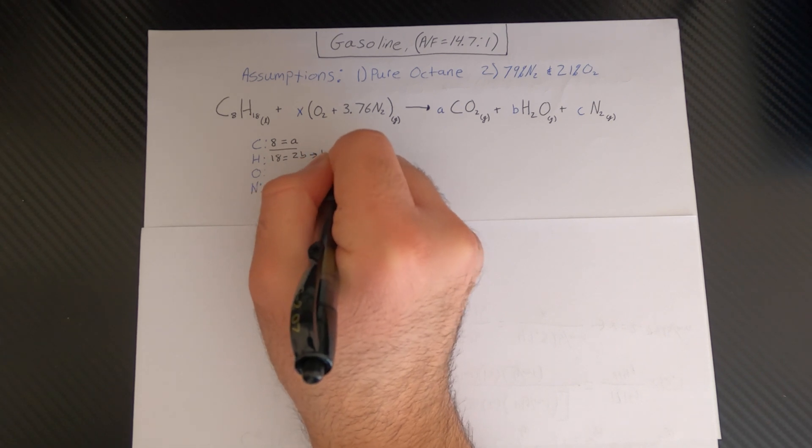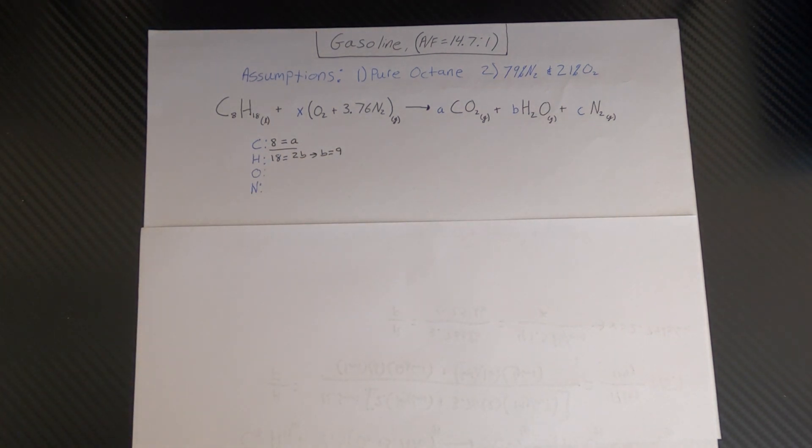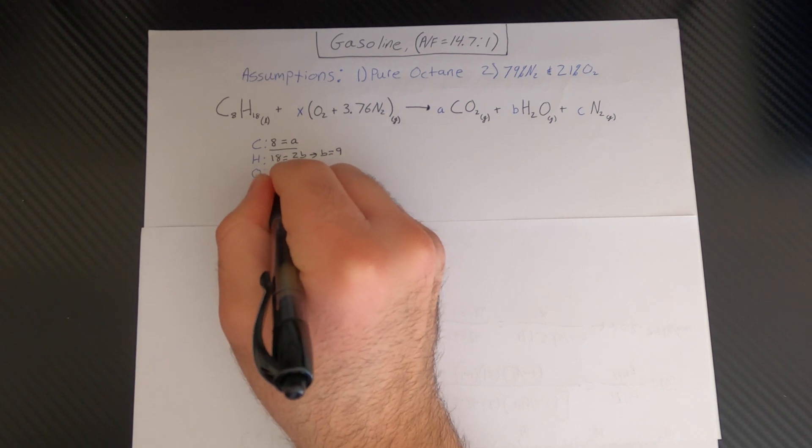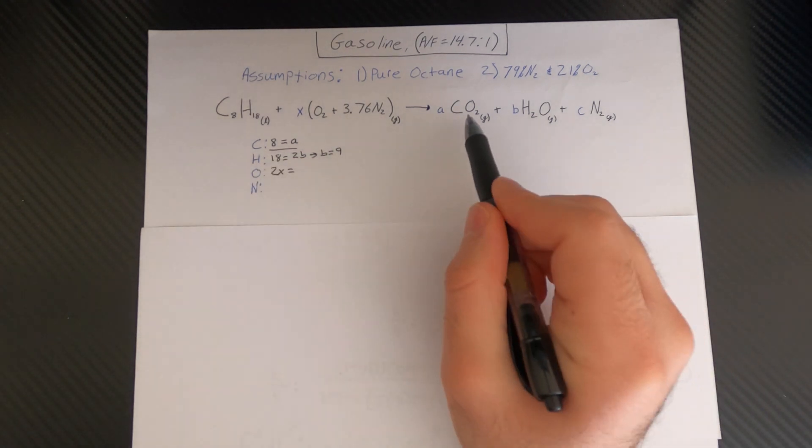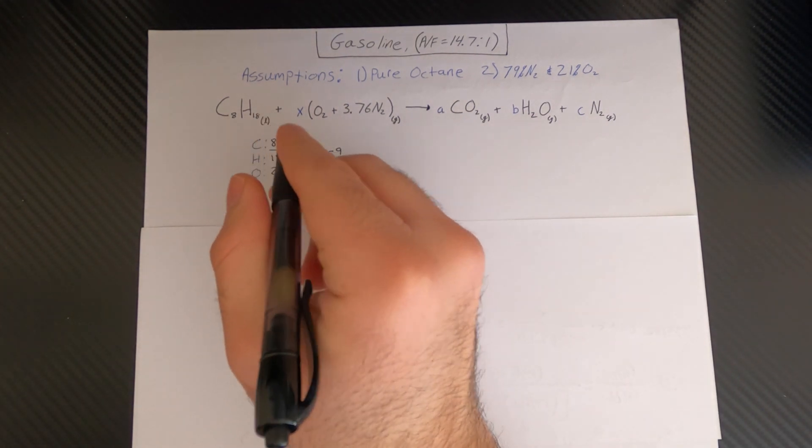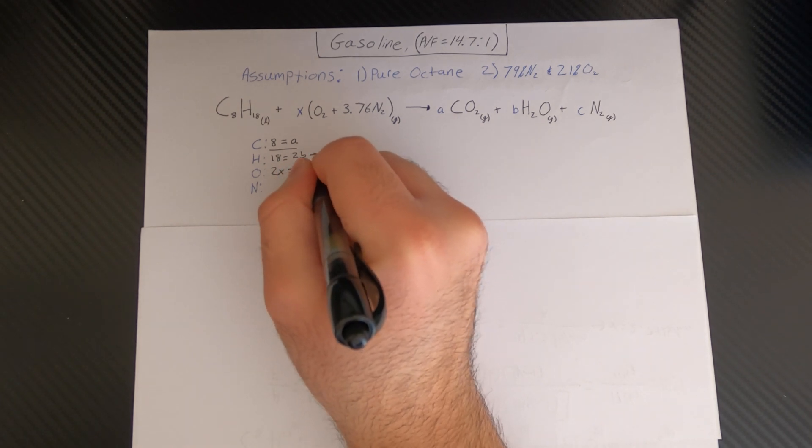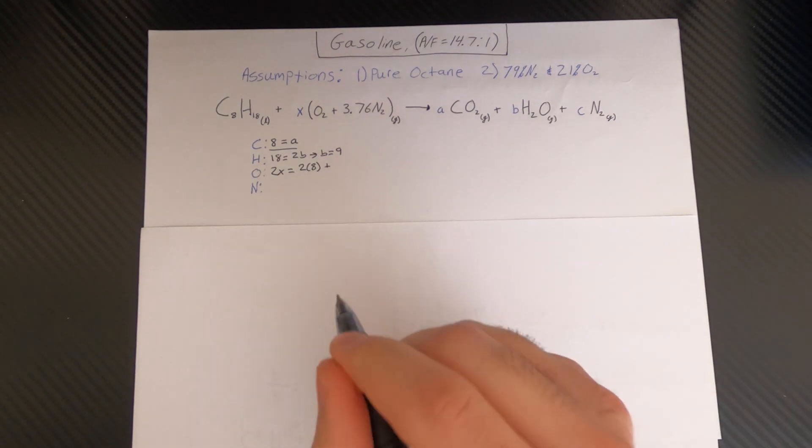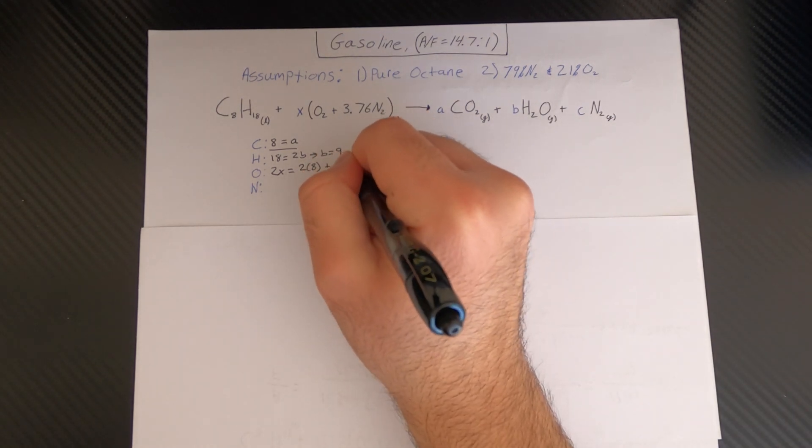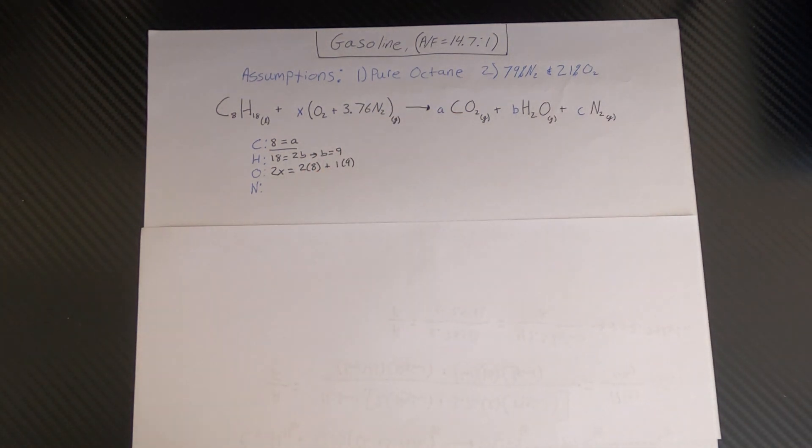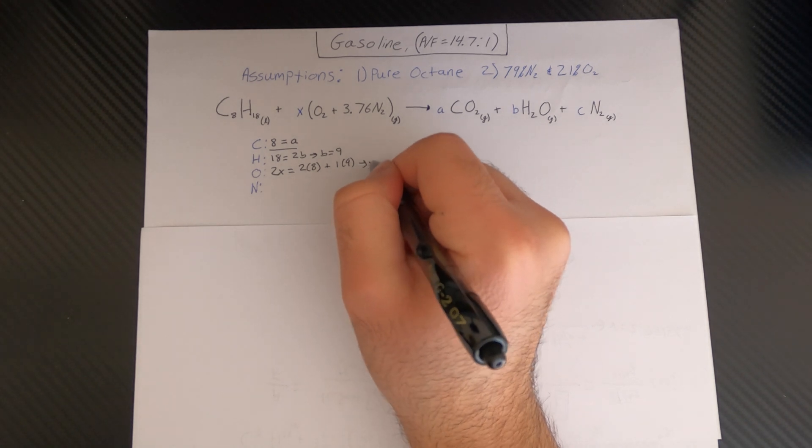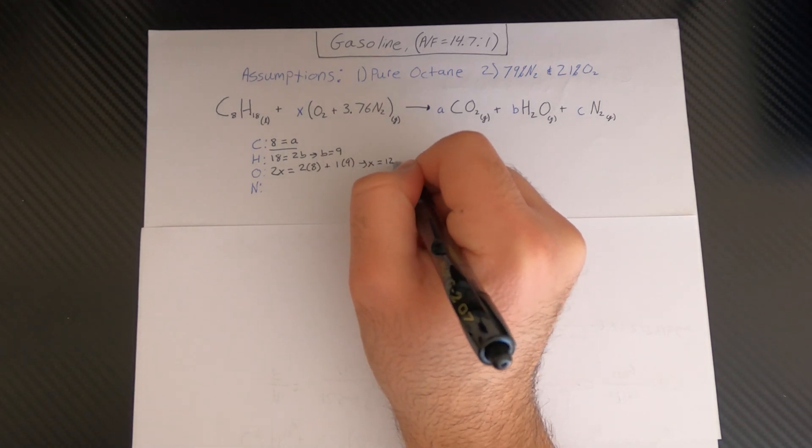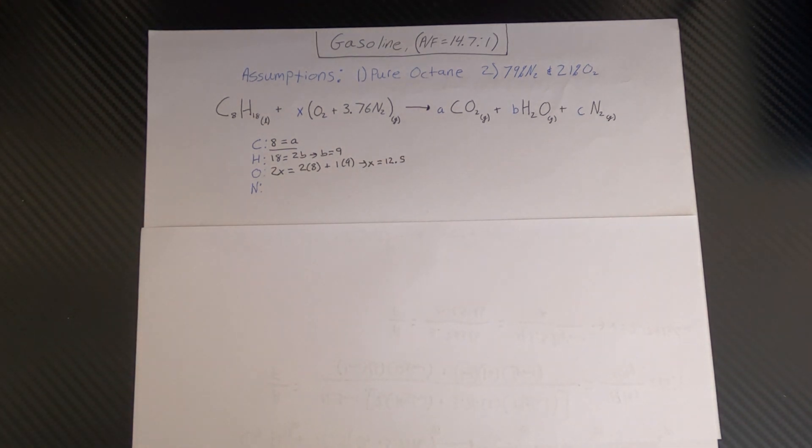And we can continue that with oxygen where we have two times X is equal to two times A, which is 8, plus we have one times B, which B is 9. And then here we can solve for X and get X is equal to 12.5.